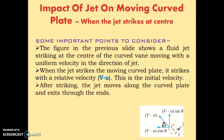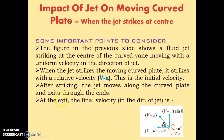After striking, the jet moves along the curved plate and exits through the end. At the exit, the final velocity in the direction of the jet (x-direction) is v minus u times cos theta. Since it is opposite to the direction of the jet, it is written as minus (v minus u cos theta).